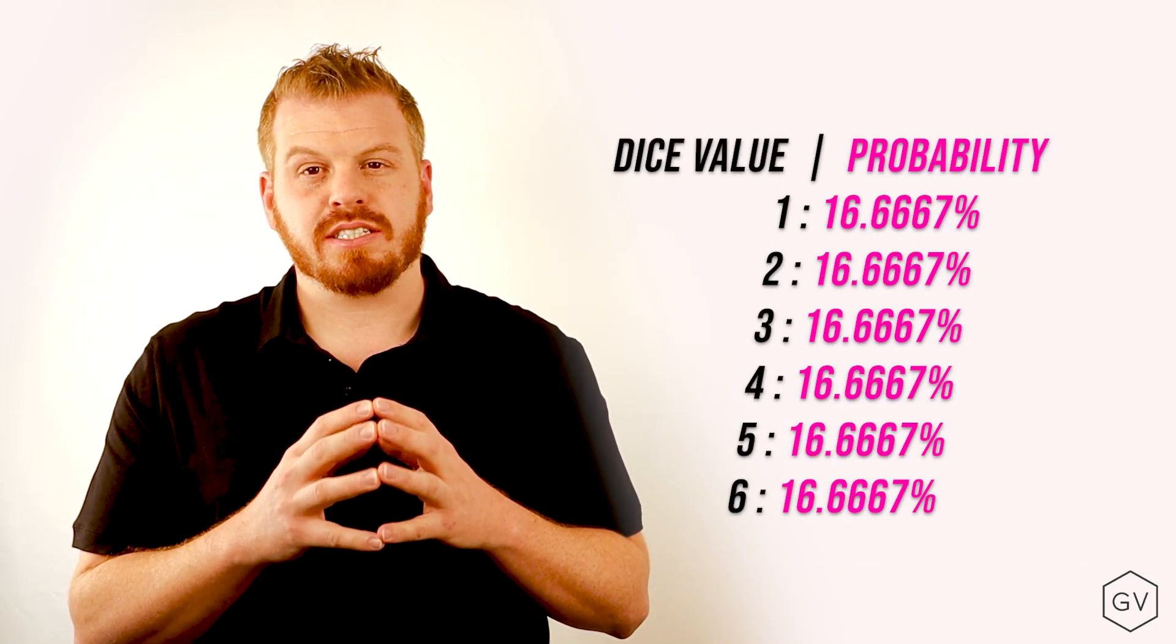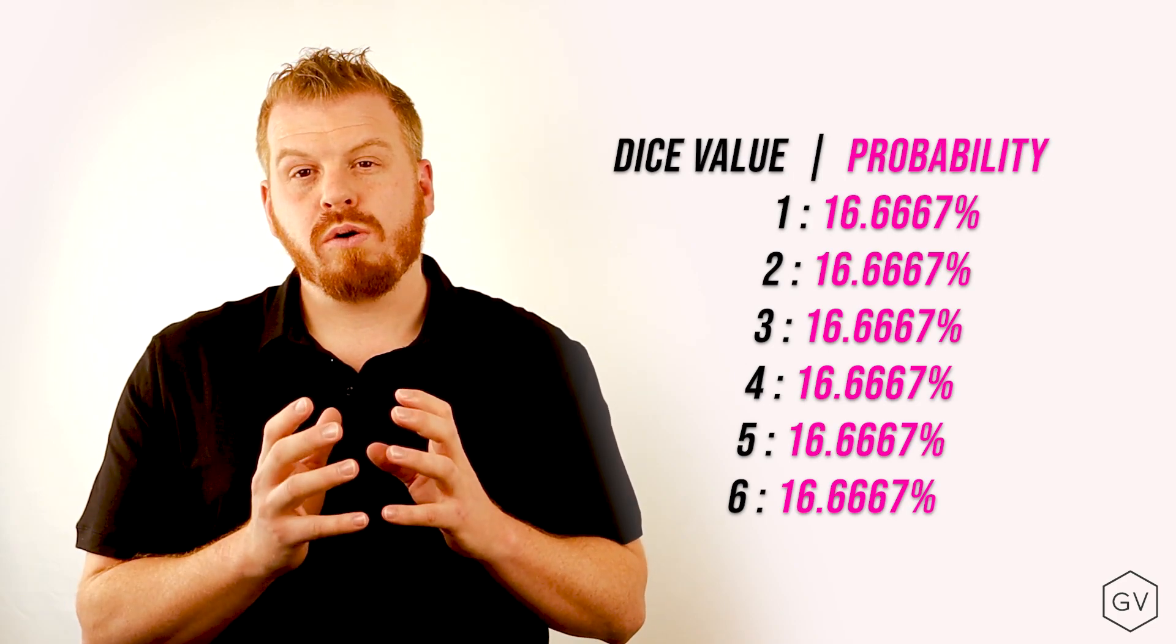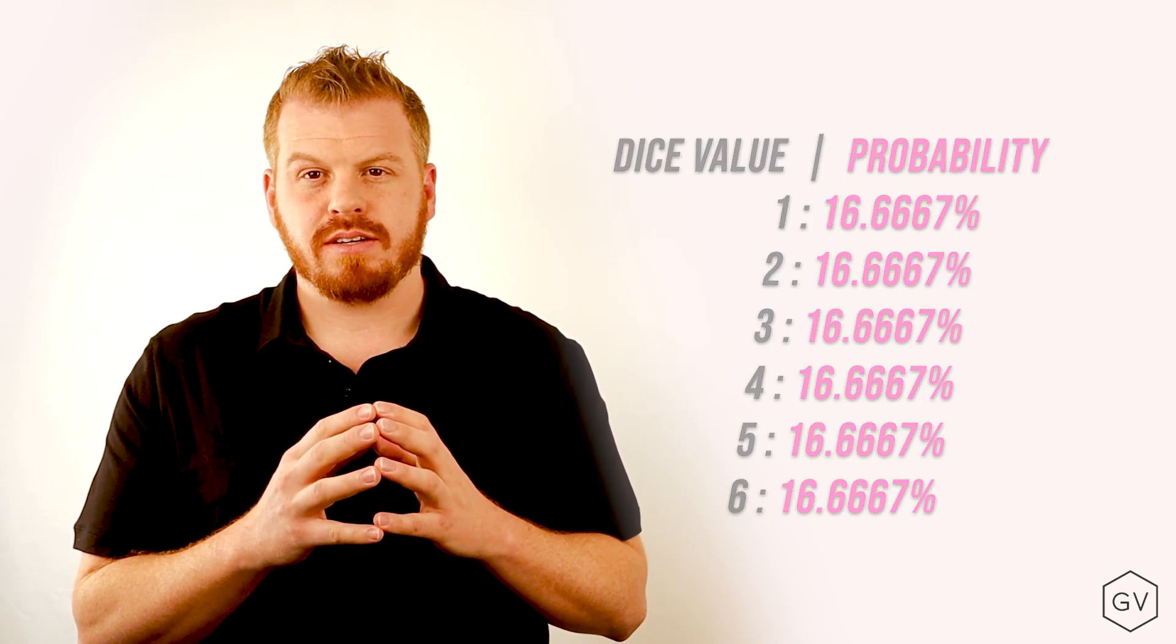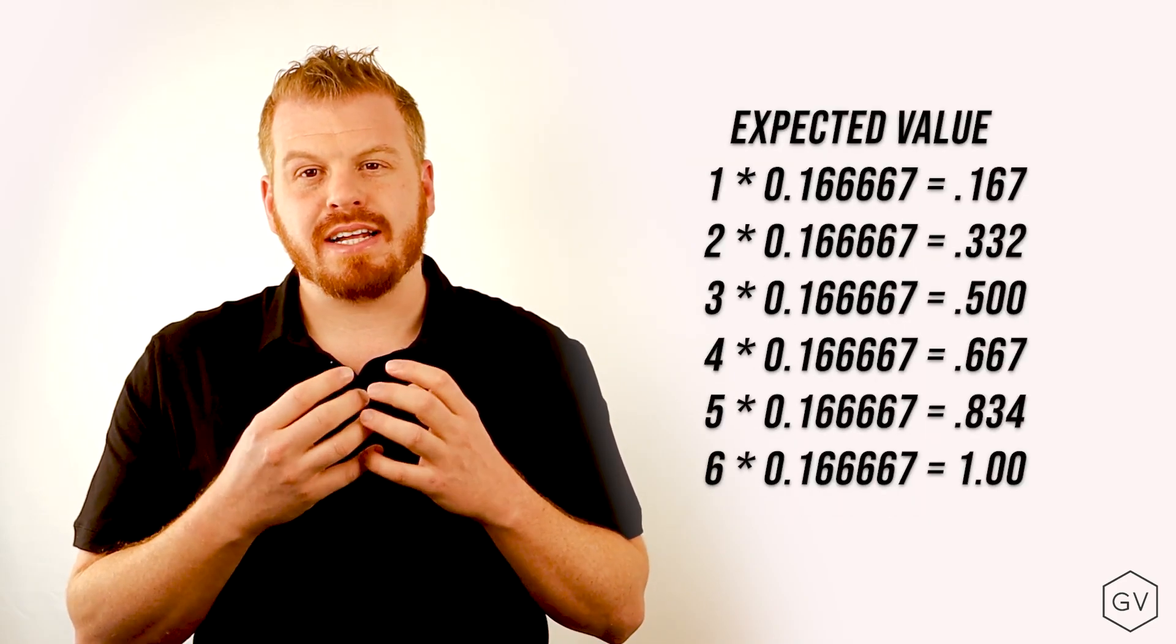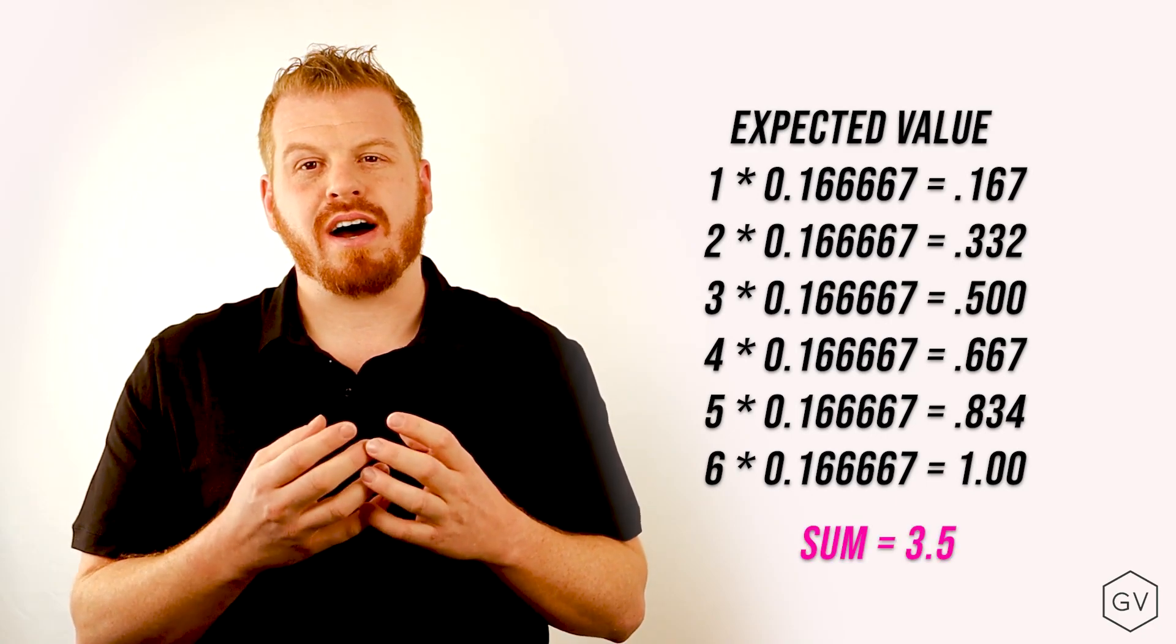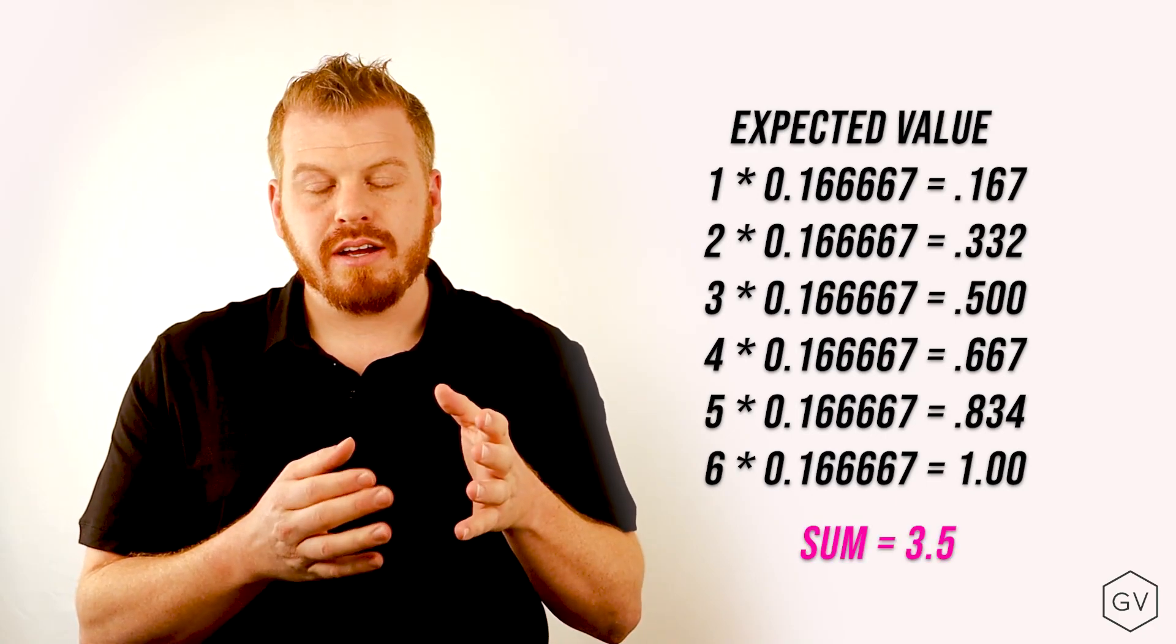One, two, three, four, five, six. Each one has a 16.6% chance of happening. If you roll a dice a thousand times, the expected value of that dice roll is going to be 3.5, between three and four. And in the long run, it's going to equal 3.5.